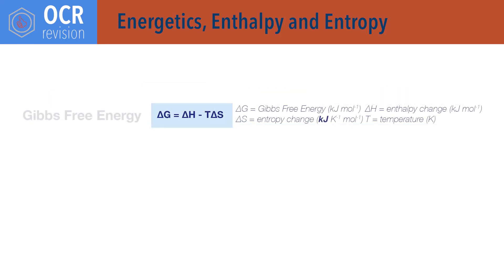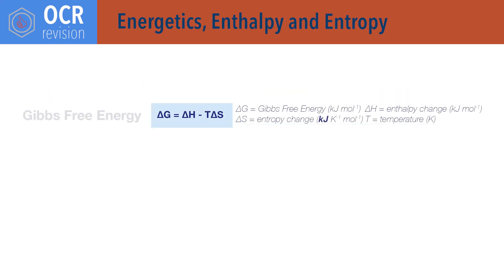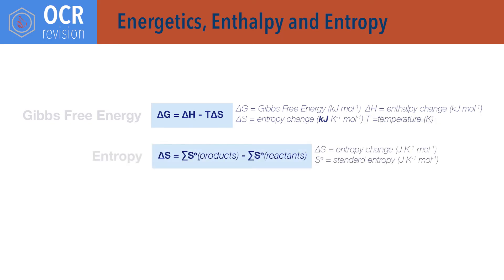Delta G equals delta H minus T delta S, where delta G is change in Gibbs free energy in kilojoules per mole, delta H is change in enthalpy in kilojoules per mole, T is temperature in kelvin, and delta S is change in entropy. Note that the units of entropy are usually joules per kelvin per mole; however, in this equation, change in entropy must be given as kilojoules per kelvin per mole — divide delta S by 1000 to do this. Delta S change in entropy equals sum of entropies of products minus sum of entropies of reactants.